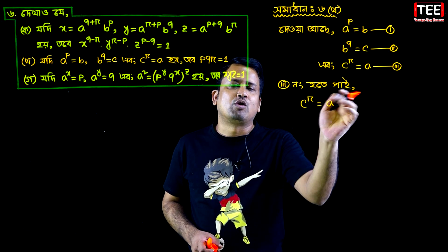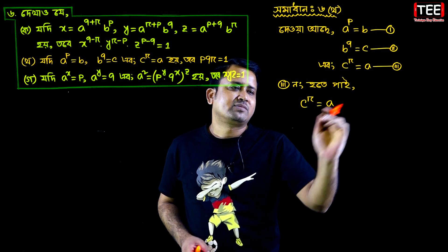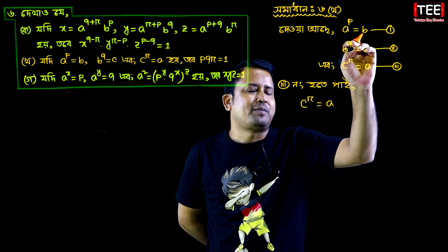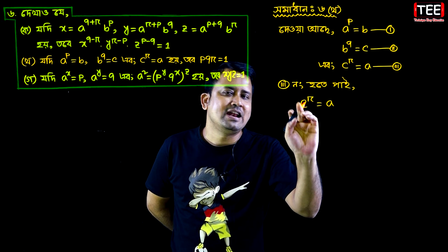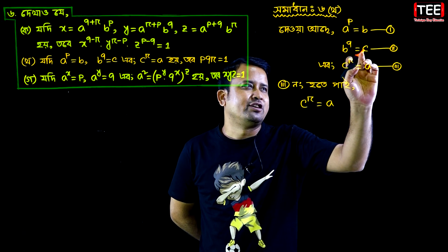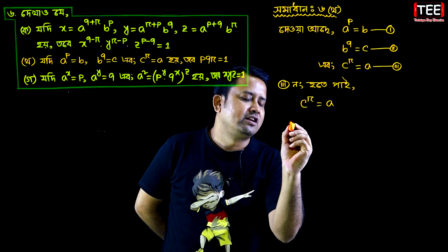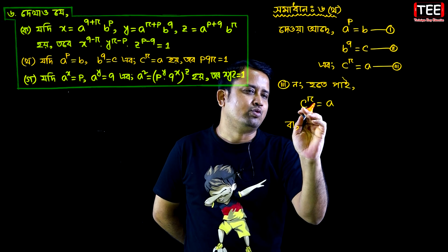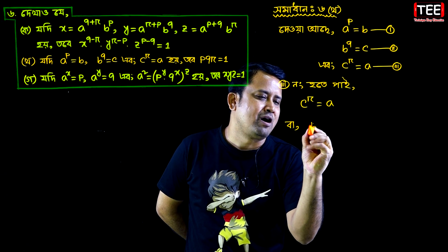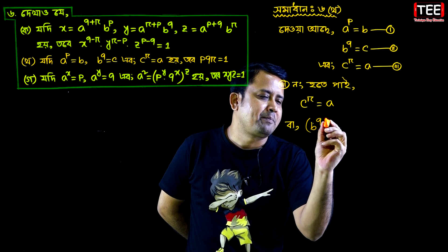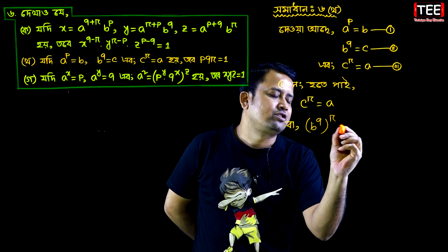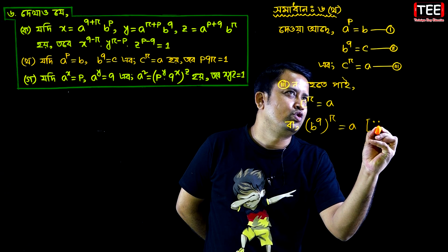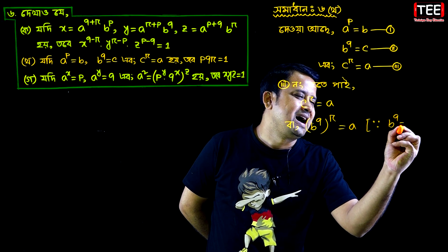Now, we have equation 3, and we have to write. So let's see — c knows how to be the power q. We have c to the power q. This will be c to the power q. Now we have b to the power q equals c.